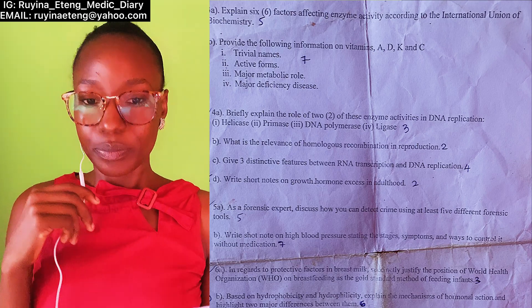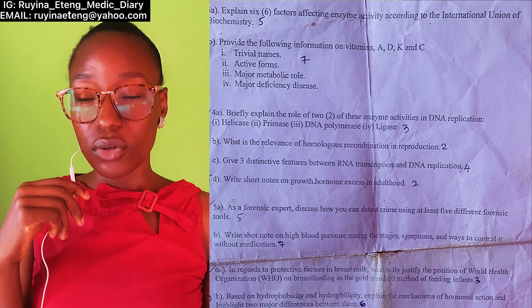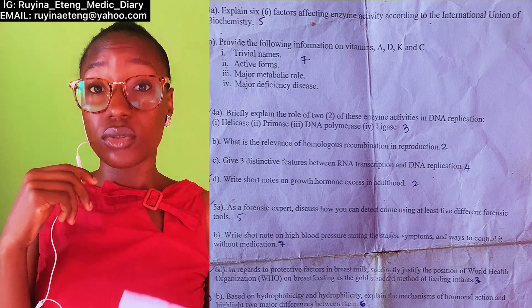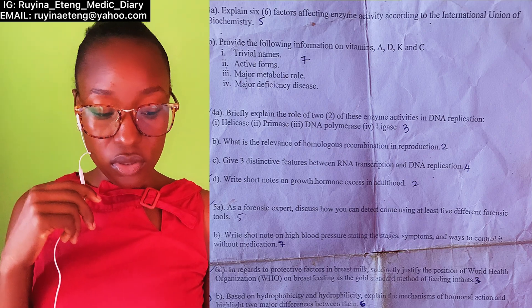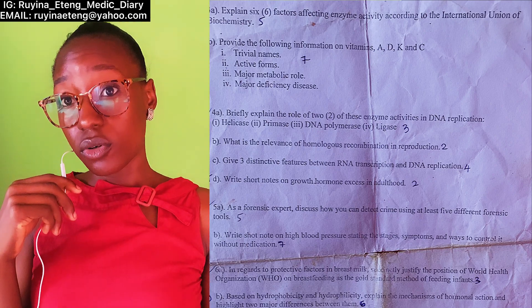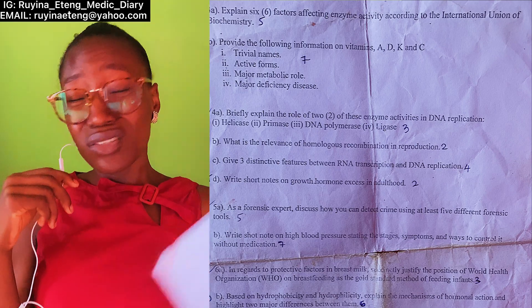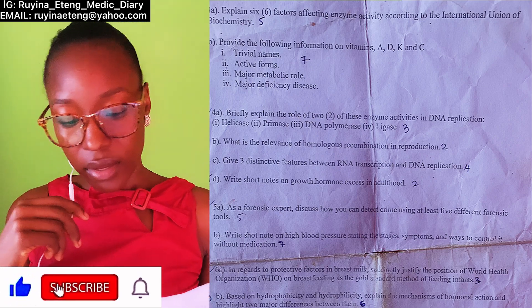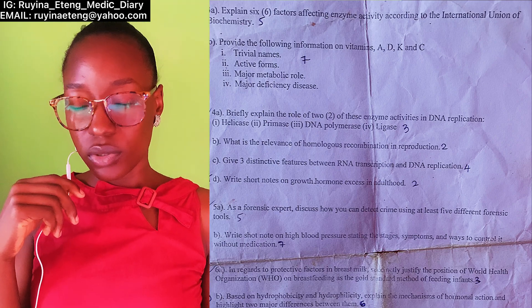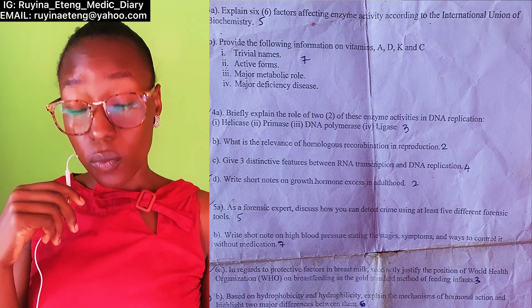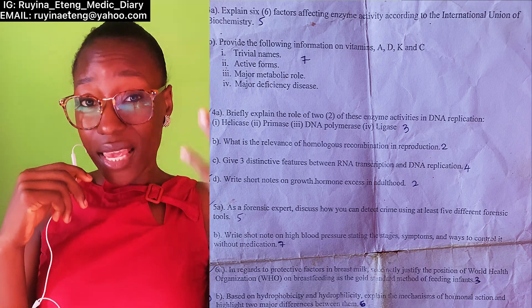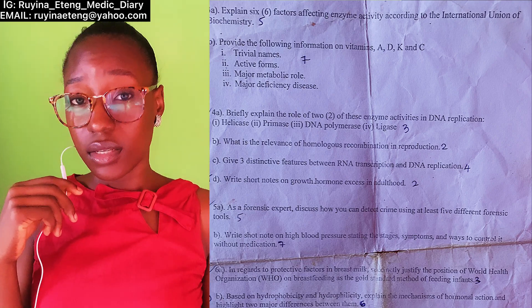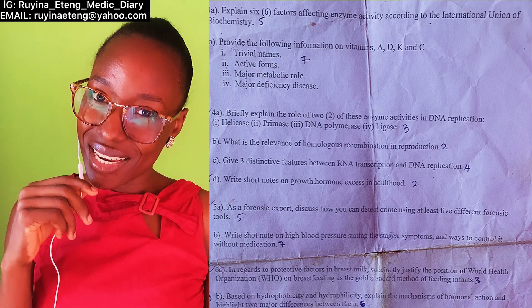Question 6B: 'Based on hydrophobicity and hydrophilicity, explain the mechanisms of hormonal action and highlight two major differences between them.' This one is not straightforward. Some hormones have receptors in the cell membrane, some in the cytoplasm, and some act directly in the nucleus. It's asking you to differentiate hydrophobic from hydrophilic hormones in terms of mechanism. This wasn't directly in our lecture notes — those who missed class would have found it difficult. One good tip: don't miss classes.